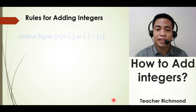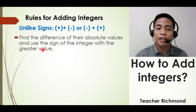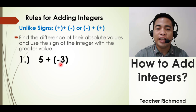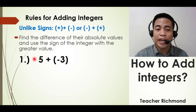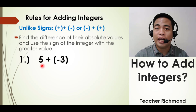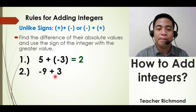Now let's proceed to the second rule of adding integers — the rule for unlike signs. Find the difference of their absolute values and use the sign of the integer with the greater value. First example: positive 5 plus negative 3. These are unlike signs because 5 is positive and 3 is negative. Get the difference between 5 and 3, which is 2. The greater number is 5 and it is positive, so the answer is positive 2.